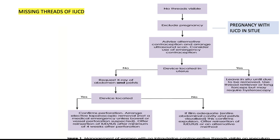If a woman complains that her thread is not visible, the first step is to exclude pregnancy by doing a pregnancy test. If pregnancy is ruled out, advise alternative contraception, arrange an ultrasound scan, and consider use of emergency contraception.